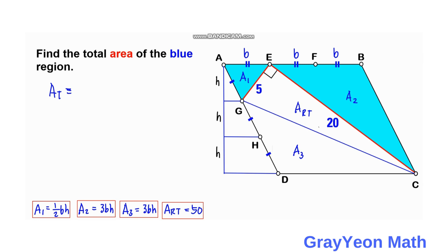So the base is 3b. It is simply just the base times height. So the height is 3h. So area total is equal to 9bh.